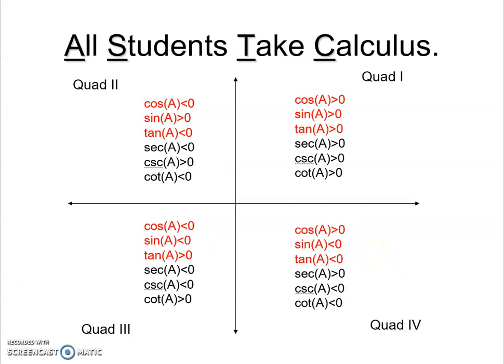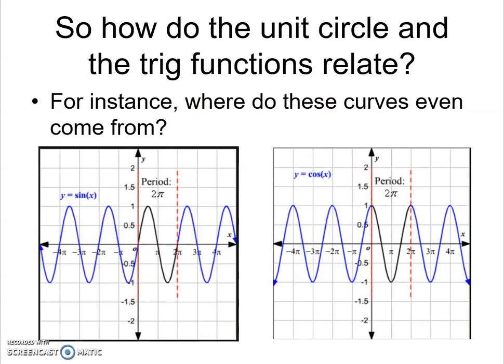The next question then becomes how does what we just examined in terms of the magnitude of sine and cosine as we move along that unit circle and their signs how does that relate to these function graphs when we just graph sine when we just graph cosine on the x y axis? What relationship does the unit circle have with these? Take a second and examine them and then we'll talk about it.